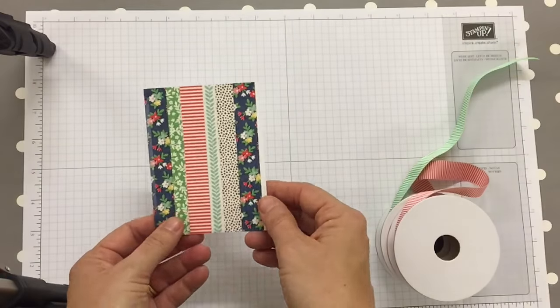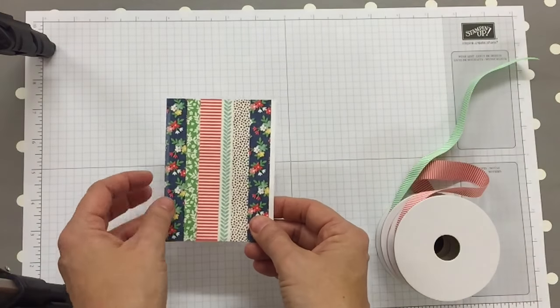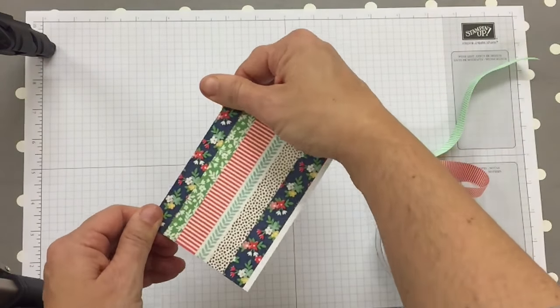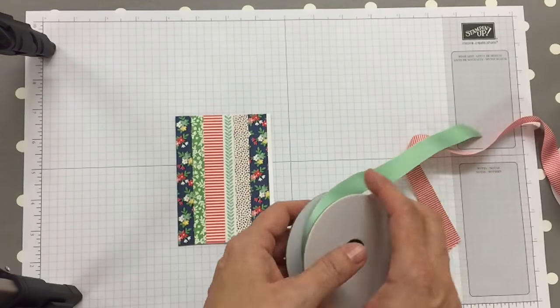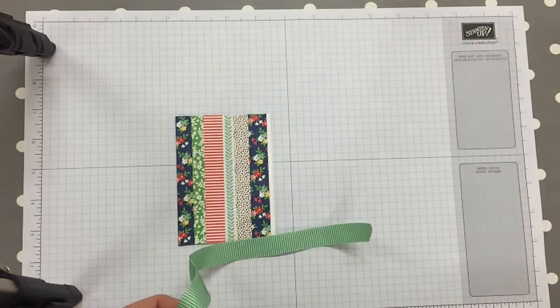Okay, so just for the purposes of this video, I've taped some washi tape onto some card just so I've got something nice to tie my bow around, and I'm just going to share a few tips with you.